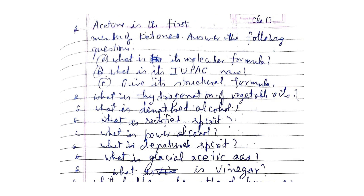What are isomers? Write the two isomers of butane with their structural formulae. Acetone is the first member of the ketone family — what is its molecular formula, IUPAC name, and structural formula? What is hydrogenation of vegetable oils? What is denatured alcohol? What is rectified spirit? What is power alcohol? What is denatured spirit? What is glacial acetic acid?